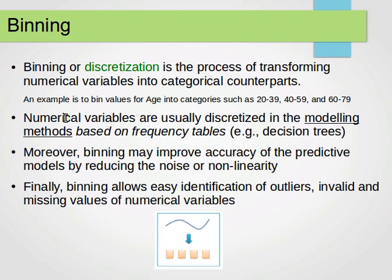This process of binning or discretization is usually done in modeling methods or machine learning algorithms which are based on frequency tables. One example is decision trees — we'll cover that when we discuss data mining and machine learning algorithms in the next tutorial. Moreover, binning may improve the accuracy of predictive models; it reduces noise and allows easy identification of outliers, invalid, and missing values.